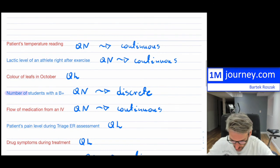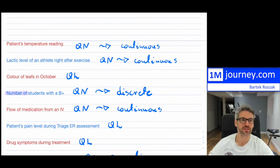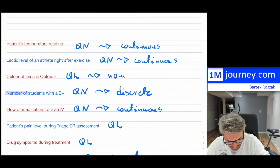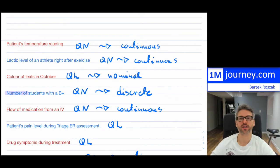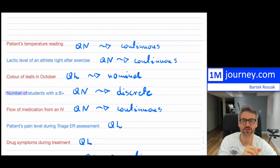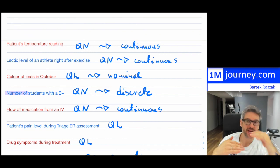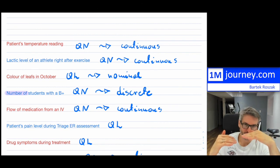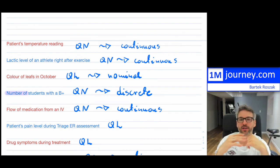For the qualitative examples: color of leaves in October — set as red, yellow, brown — this would be nominal; there is no real order. However, you have to be careful. If you're talking about shades of red or yellow leaves — very faint yellow, medium yellow, extremely bright yellow — now you're creating order. That would be an ordinal qualitative variable. But if it's just general colors you're looking at, that would be nominal.